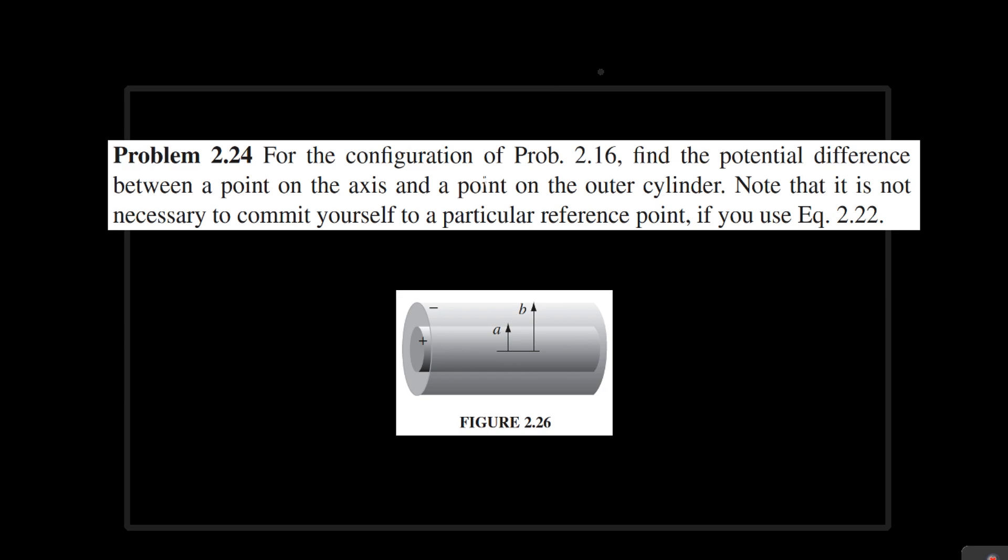The problem here is simple. All we have to do is take the configuration in problem 2.16 and find the potential difference between a point on the outer cylinder and a point on the axis.